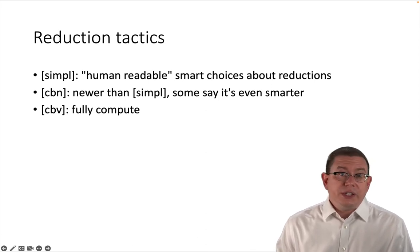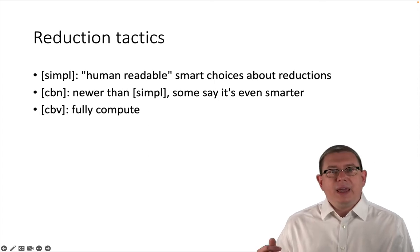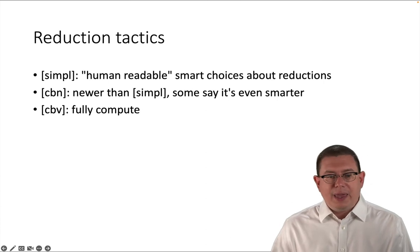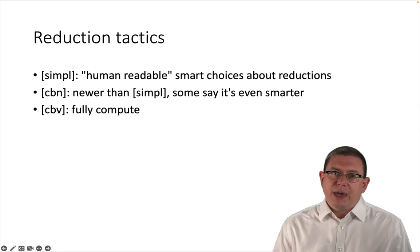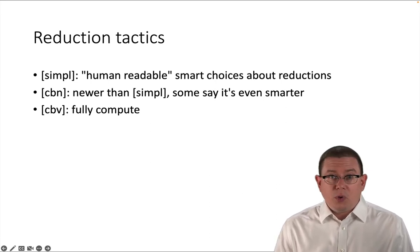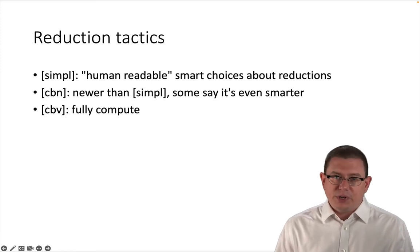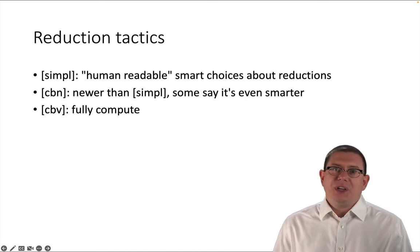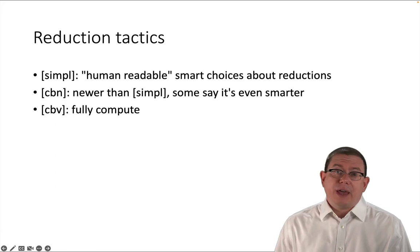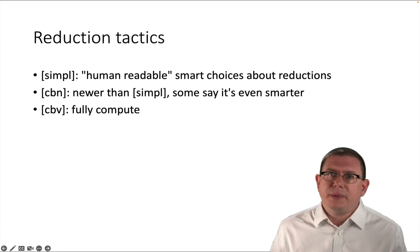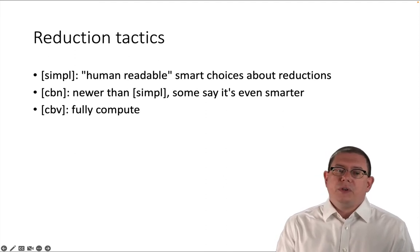Before I do that, let me point out that there are at least two other alternatives to simple in terms of trying to reduce an expression down to a final value. And those are CBN and CBV, which stand for call by name and call by value. CBN is trying to do something like call by name. It's newer than simple. There are some people who say that it's even smarter about the choices that it makes. You can give it a try. If simple is not working for you someday, maybe try CBN and see if it does something more reasonable for you. CBV is trying to fully compute. It's trying to get down to that bottom of that confluence, do all of the applications that it could possibly do and end up with a final result. So we've got simple, CBN and CBV.